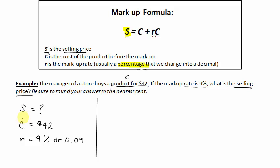All right, so now we're ready to plug this into our formula. The markup formula is S equals C plus R C. The selling price we don't know. But the cost of the product is $42. Plus the rate, which we will write as 0.09, and the cost of the product again.